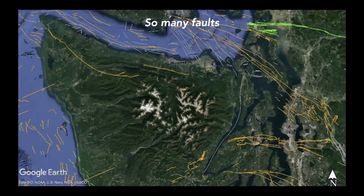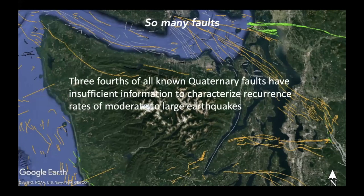We also have lots of other faults and we don't know exactly how to characterize almost three-fourths of them. This map shows everything that's been active in the Quaternary period, about two million years ago. For some of these faults, we know they've been active, but we don't necessarily know when the last earthquake was or how frequently they experience earthquakes. So there's still a lot to figure out.